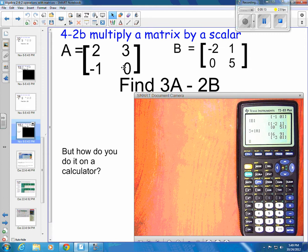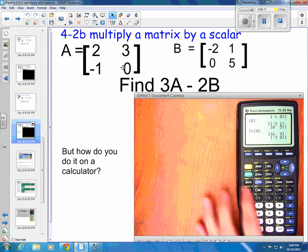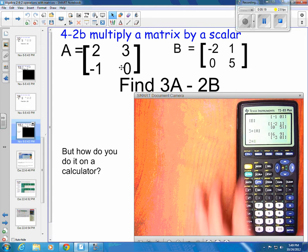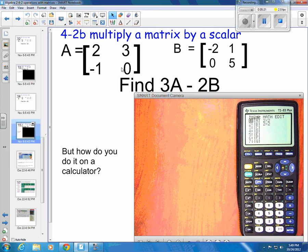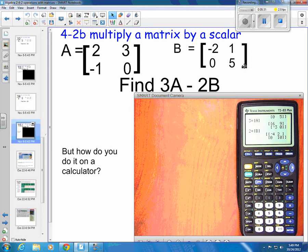And then I could then take 2 times 2nd matrix, come down to B. And you can see that that actually works, so it multiplies 2 times negative 2 is negative 4, right, negative 4 right there. 2 times 1 is 2, 2 times 0 is 0, and 2 times 5 is 10.